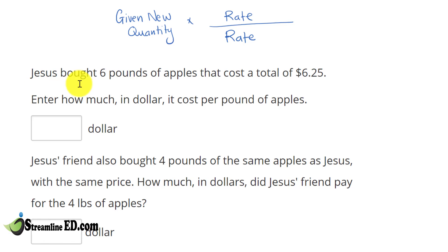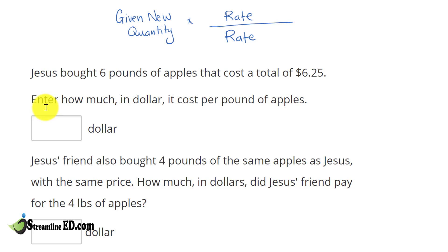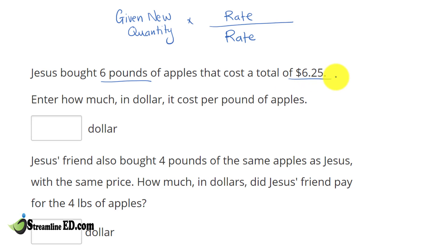Jesus bought 6 pounds of apple that costs a total of $6.25, and we need to find how much in dollars it costs per pound of apple. So again, what is our rate? We have one quantity right here: 6 pounds of apple, and a cost of $6.25.